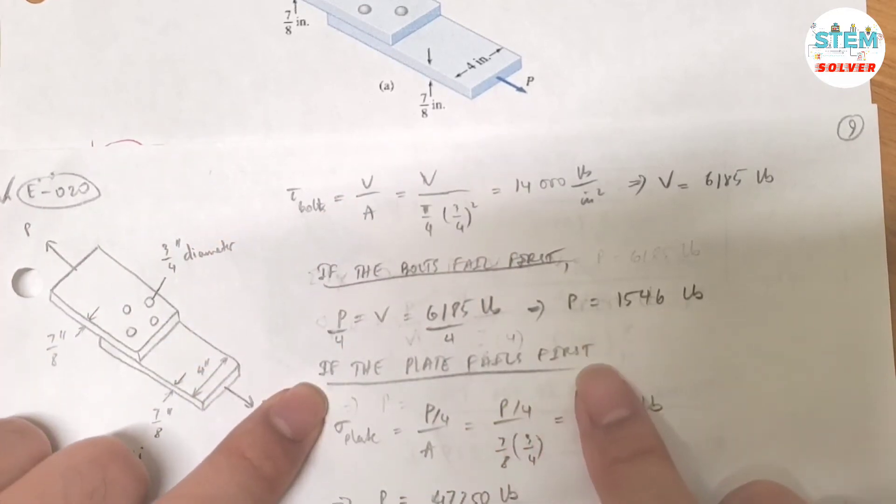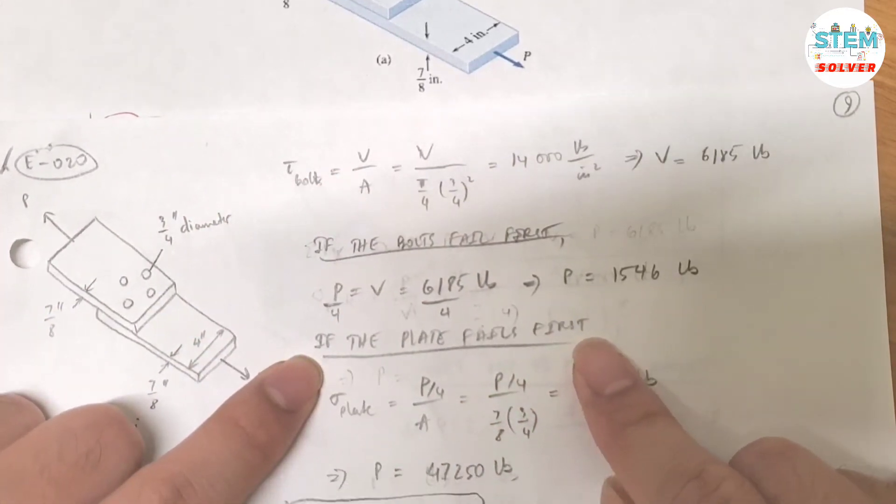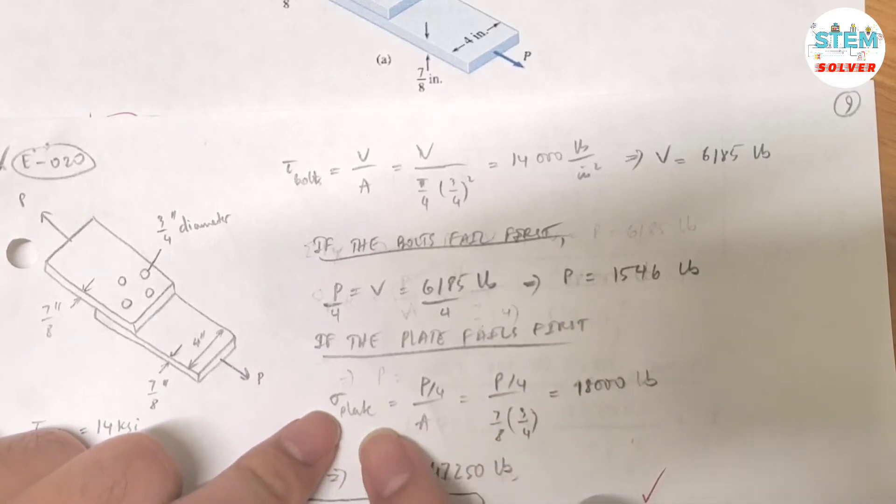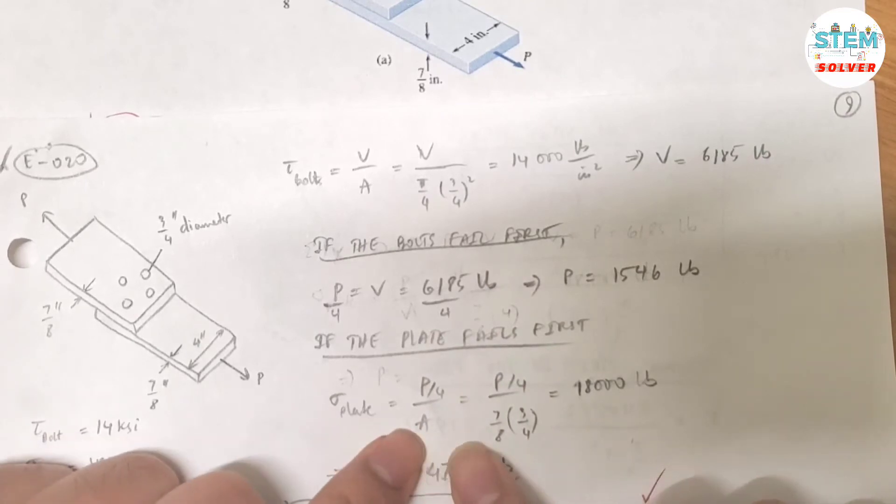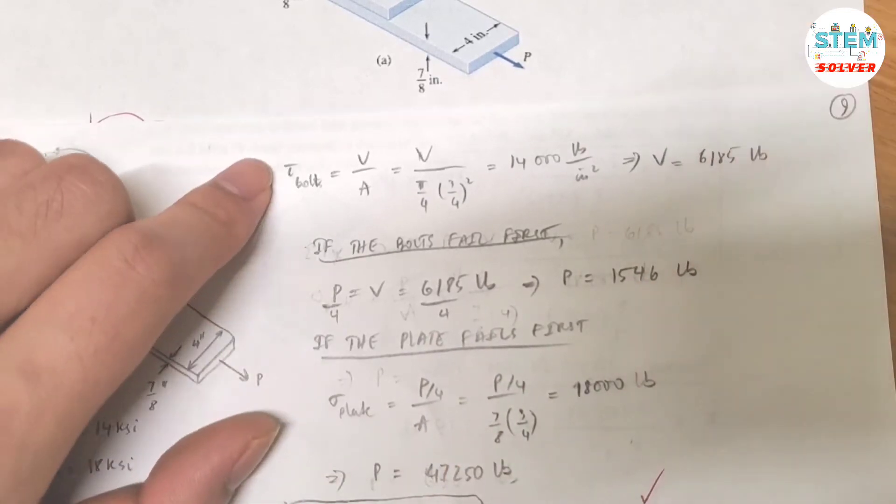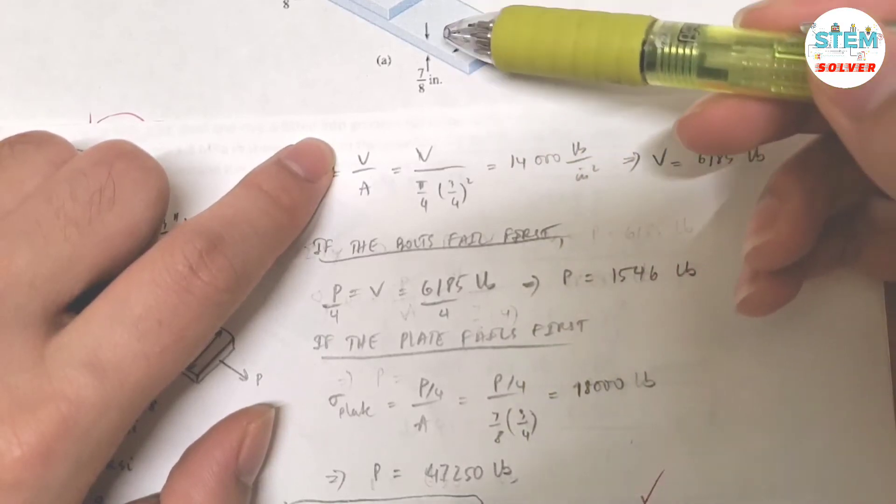Now if the blade fails first, the bearing stress equals the force P divided by the area. In this case, the force P is divided into 4 because you have 4 rivets. Now be careful for this one. The area for the blade is this one.